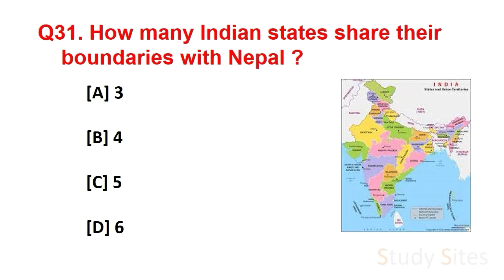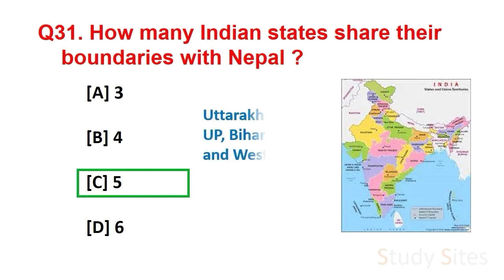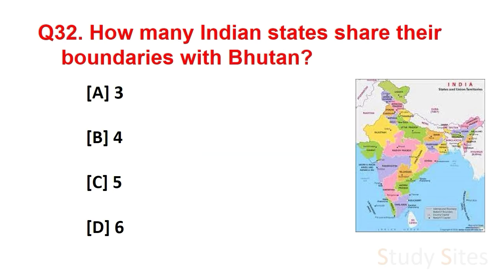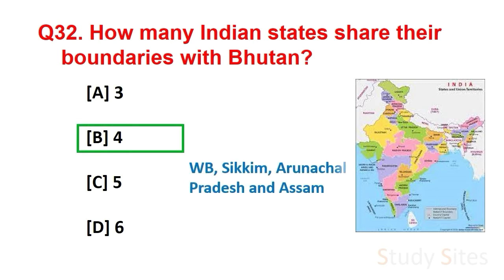Question number 31. How many Indian states share their boundaries with Nepal? Answer is 5. They are Uttarakhand, Uttar Pradesh, Bihar, Sikkim and West Bengal. Question number 32. How many Indian states share their boundaries with Bhutan? Answer is 4. They are West Bengal, Sikkim, Arunachal Pradesh and Assam.